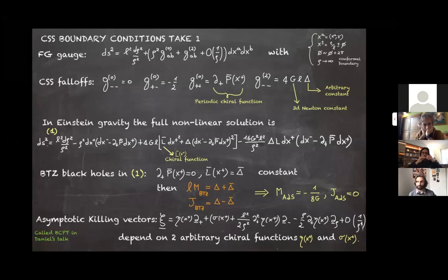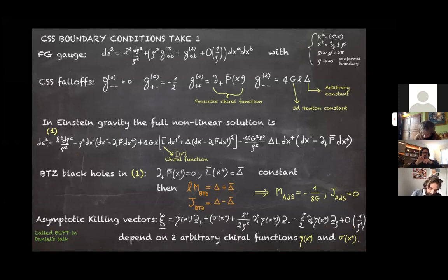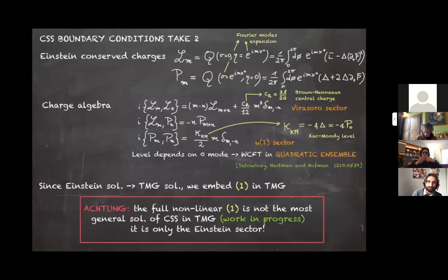The asymptotic Killing vectors — what Daniel called boundary-condition-preserving transformations — for this metric are given by an expression involving two arbitrary chiral functions of x+ only: eta and sigma. These are the CSS boundary conditions, and we can compute the charges for Einstein gravity.